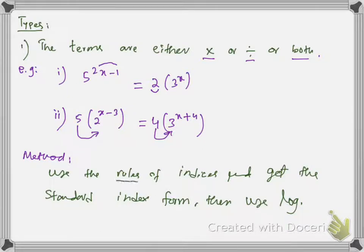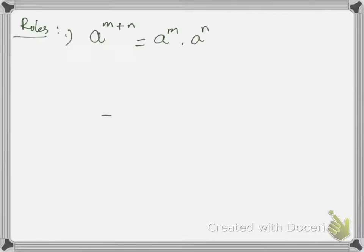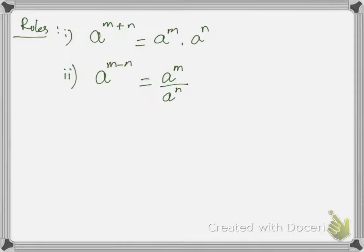Let me tell you which particular rules of indices will be used in these type of equations and what are the standard index forms. The most important rules of indices are: Rule 1: A^(M+N) = A^M · A^N. Rule 2: A^(M−N) = A^M / A^N. These are two very important rules used while solving index equations of Type 1.